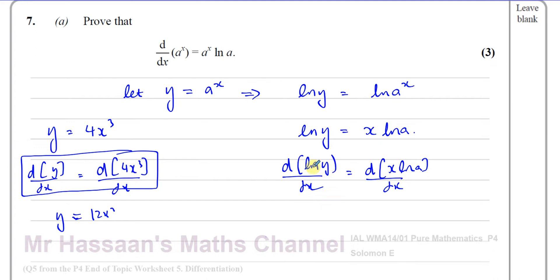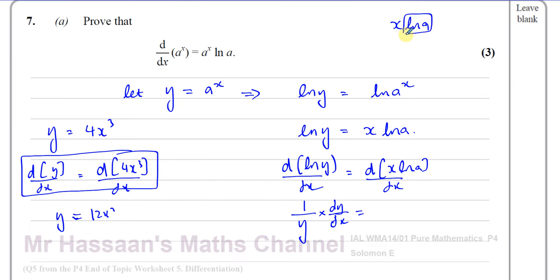When you differentiate ln of something you get 1 over that thing, so it's 1 over y. Using the chain rule, you multiply by the differential of y with respect to x, which is dy/dx. That's why we write dy/dx when differentiating something in terms of y. On the right side, ln a is just a constant — like differentiating 3x gives 3 — so differentiating x times ln a gives ln a.